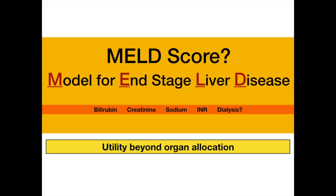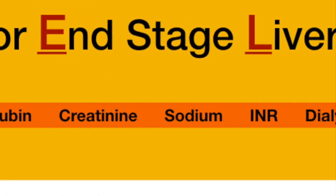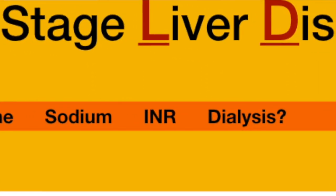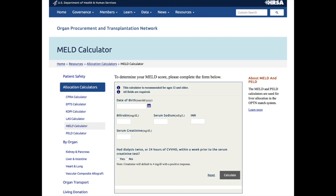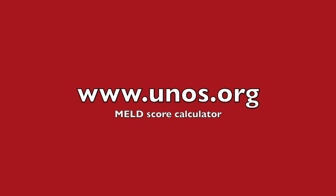One area that everybody should have a good working knowledge of is the MELD score — the Model for End-Stage Liver Disease. There are four laboratory values that make up the MELD score: serum bilirubin, creatinine, sodium, INR, and whether or not the person is on hemodialysis. There are many online MELD score calculators; the one I go to is on the UNOS website — the United Network for Organ Sharing — at unos.org. Typically, the MELD score goes from 6 to 40, with 40 being the cap for transplant.